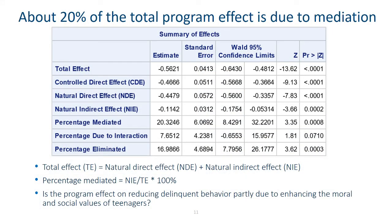This is the main table of the mediation analysis results. The total causal treatment effect is minus 0.56, which is statistically significant. On average, there is a reduction of 0.56 in delinquent behavior after controlling for all confounding effects. The natural indirect effect shows that minus 0.11 of the total effect is due to the mediation of the moral and social values of the teenagers. The remaining effect of minus 0.45 is the natural direct effect. Because the natural direct effect and natural indirect effect add up to the total effect, dividing the indirect effect by the total effect and then multiplying by 100% gives you the percentage due to mediation. This percentage is 20% here, so 20% of the total program effect on reducing delinquent behavior is due to the enhancement of moral and social values.